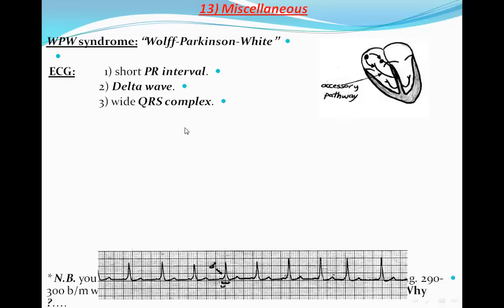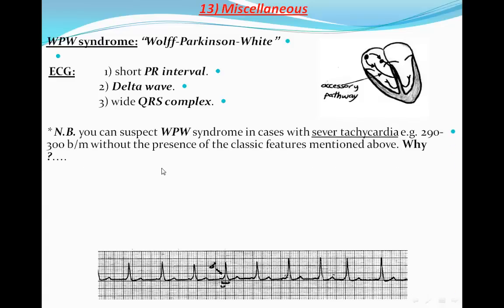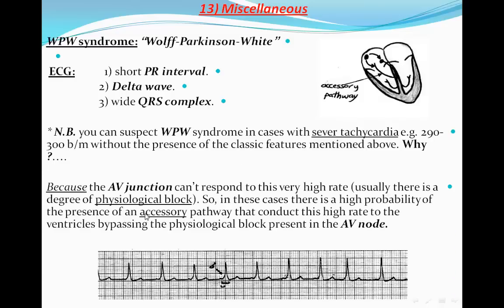But at very high heart rates, this will not be clear. That's why we can suspect WPW syndrome in cases of severe tachycardia with a heart rate of about 290 or 300 beats, without the presence of these classical features — because the AV junction cannot respond to this very high heart rate. Usually there is a physiological delay or physiological block in the AV junction. So in these cases, there is a high probability of the presence of an accessory pathway that conducts this very high heart rate to the ventricles, bypassing the physiological block in the AV node.